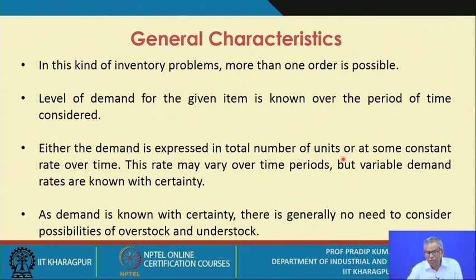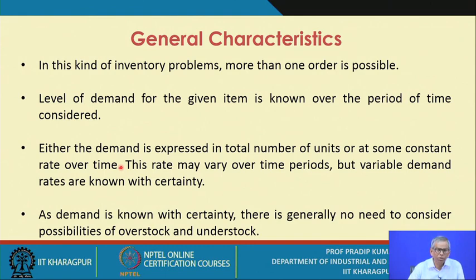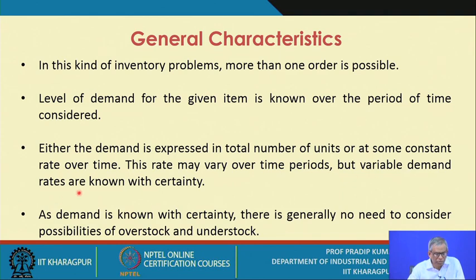Demand is expressed either as a total number of units — say 1,000 or 10,000 units — or at some constant rate over time, such as a daily demand rate of 1,000 or 2,000 units. Depending on the production rate, this rate could be on an hourly, daily, or weekly basis. What is known is the demand rate. We assume that in a dynamic inventory problem under certainty, this demand rate does not vary over time, though variable demand rates may be known with certainty.